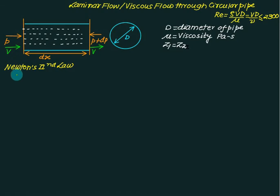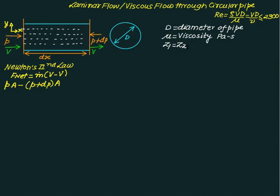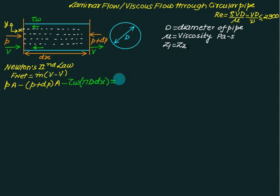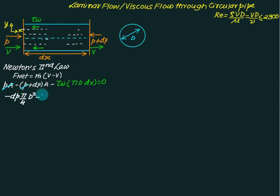For this arrangement, we apply Newton's second law: net force equals rate of change of momentum, which equals m-dot times (final velocity minus initial velocity). Since the velocity is constant, V minus V equals zero, so the right-hand side is zero. The net force equation includes: pressure force P times area (positive), pressure force (P + dP) times area (negative), and wall shear stress tau_wall acting opposite to flow direction over the surface area pi times D times dx, all equal to zero.